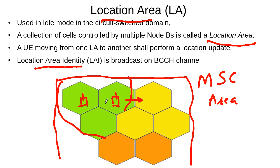In idle mode, the location of a mobile is only known at the resolution of the location area. The core network knows the mobile is somewhere within the cells included in that location area. When there is an incoming call, all cells in that location area are paged to inform the mobile. There is a tradeoff: if location areas are too small, signaling load increases; if location areas are too large, many cells must be paged for incoming calls.